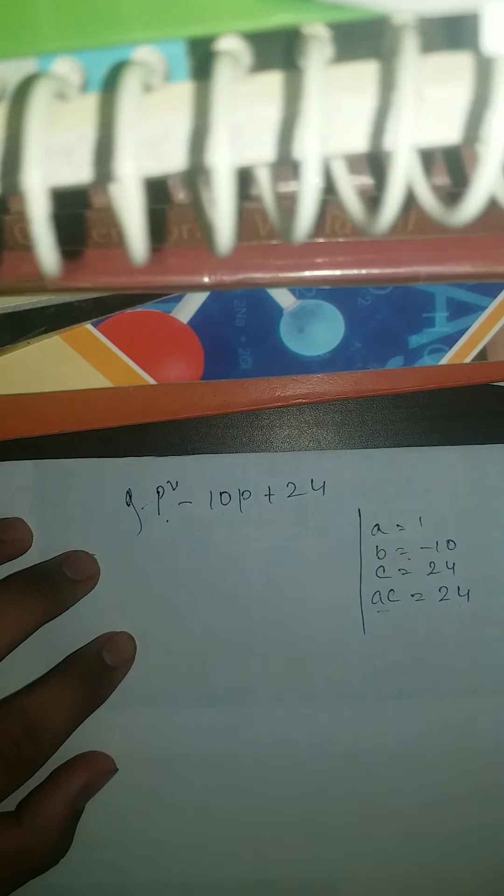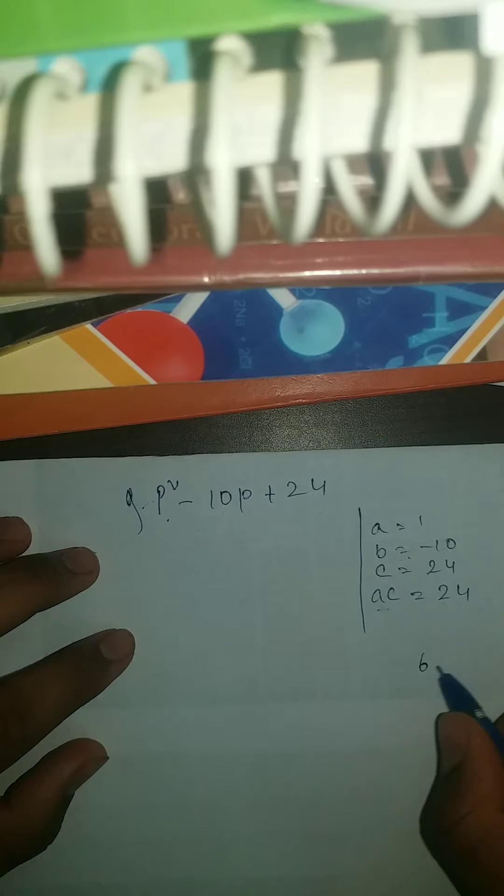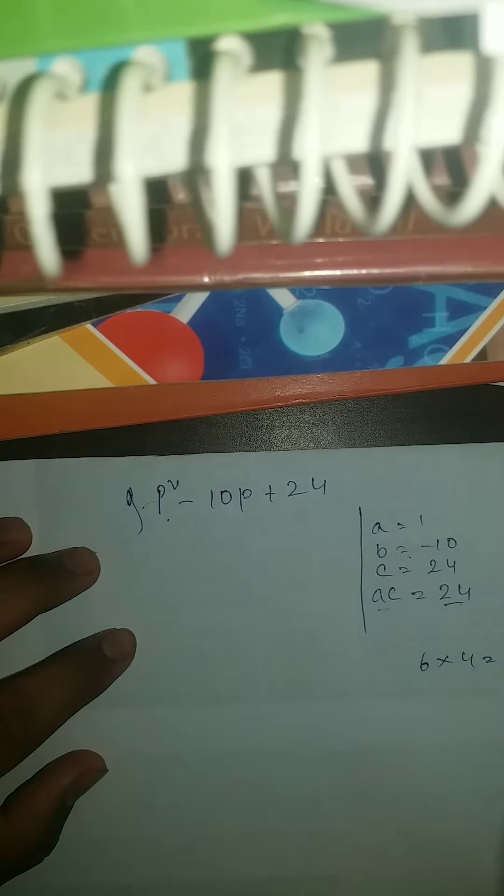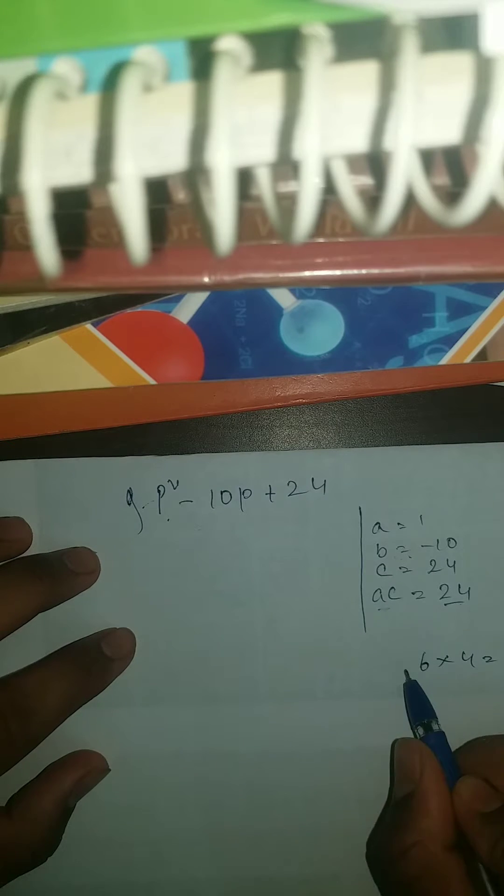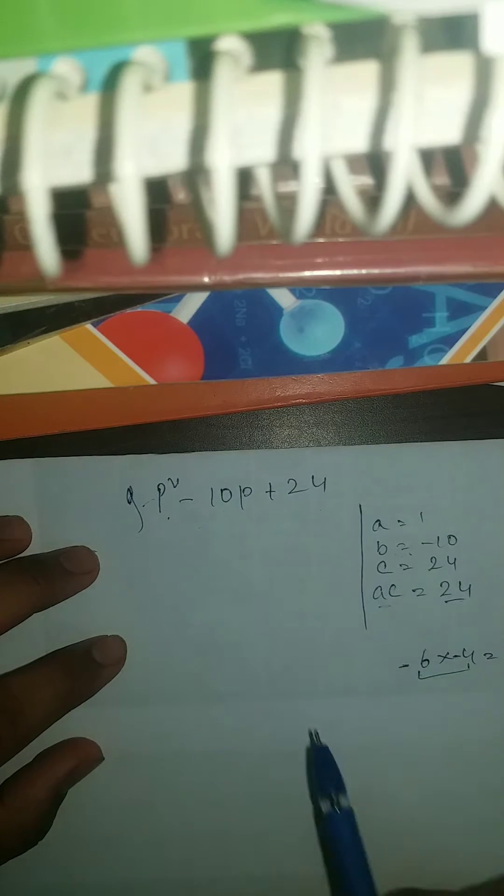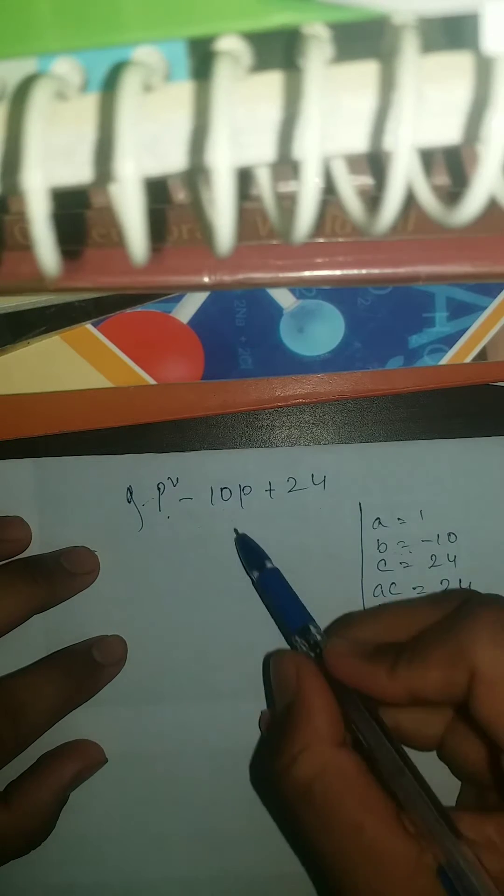So let's see what we can write. So we know that 6 into 4 is 24. So we fulfill it. Now we need minus 10. So if we write minus 6 and minus 4, that should be minus 10. And minus 6 minus 4, that should be your plus 24. So yes, we can do this.